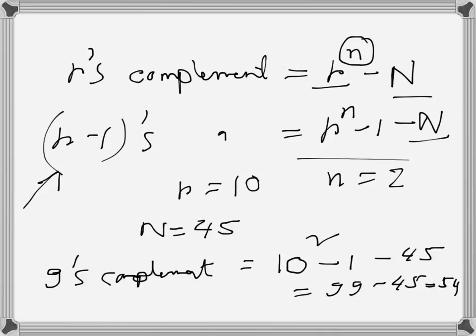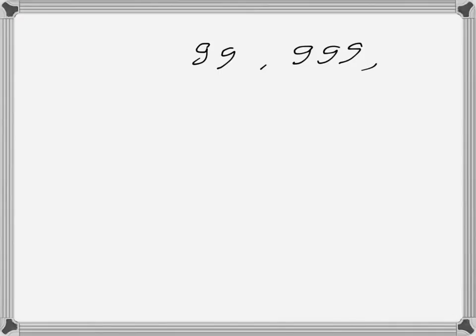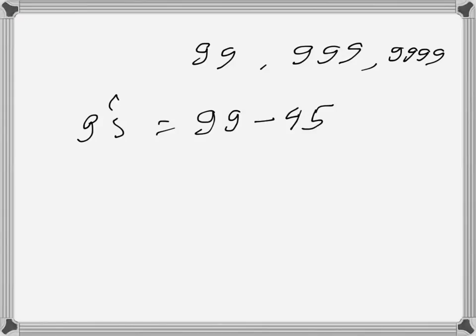Instead of using the formula each time, we can just look at the number, see how many digits it has, and find the highest possible number in that system with that many digits. Since we are in the decimal base-10 number system, for a two-digit case the highest number is 99, for three digits it's 999, for four digits it's 9999. So the 9's complement is the highest possible number minus the given number.